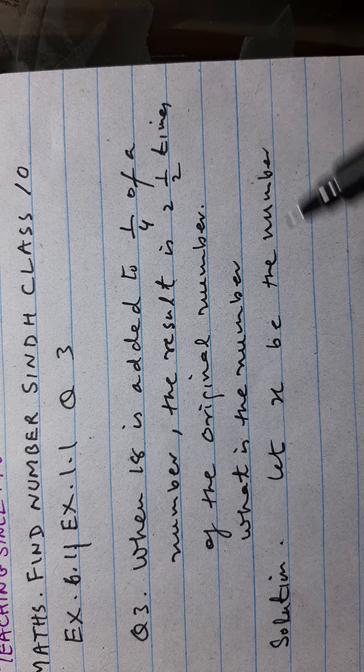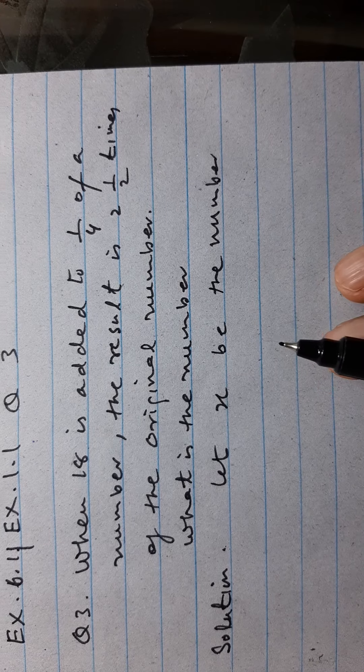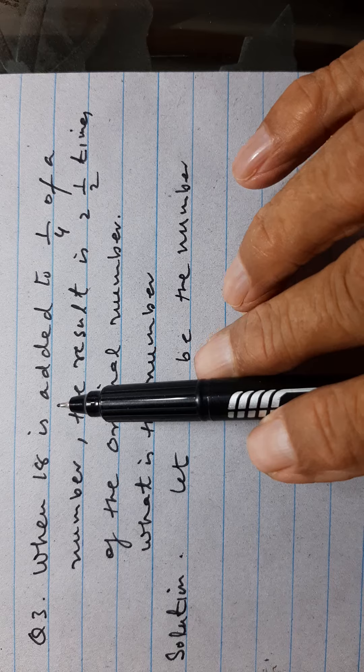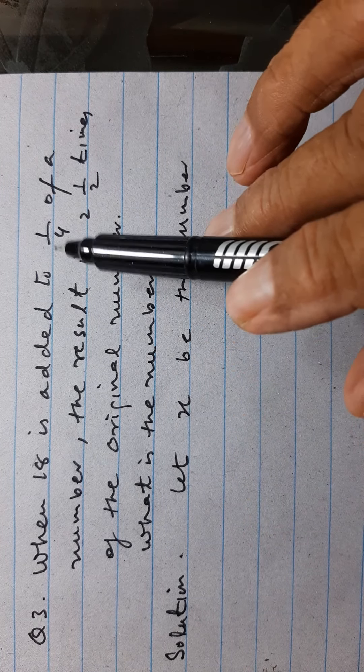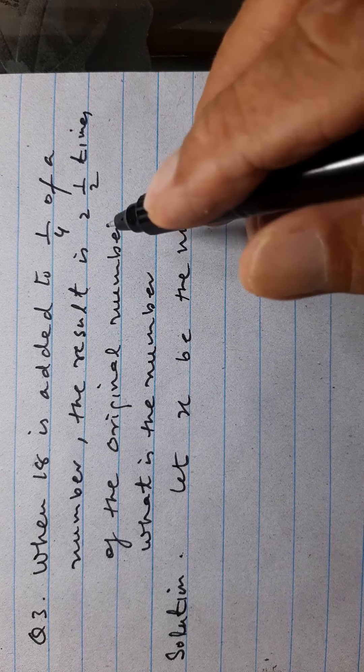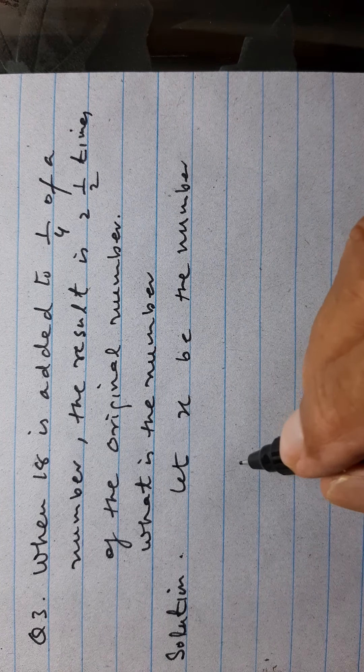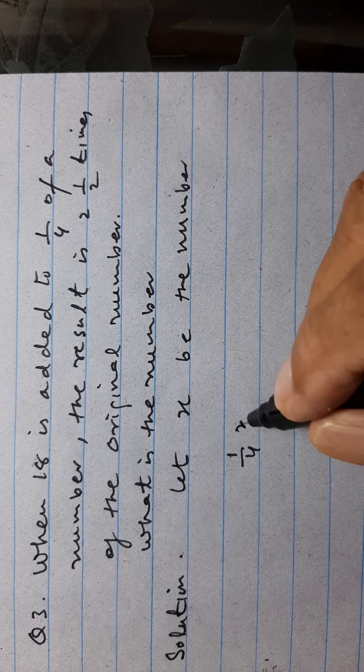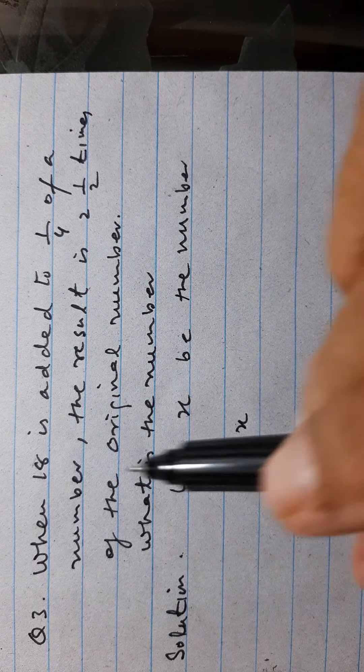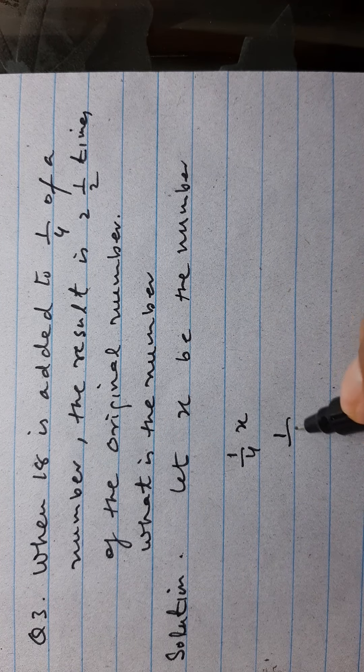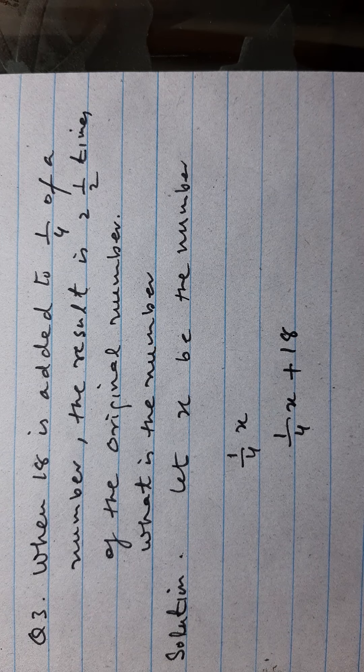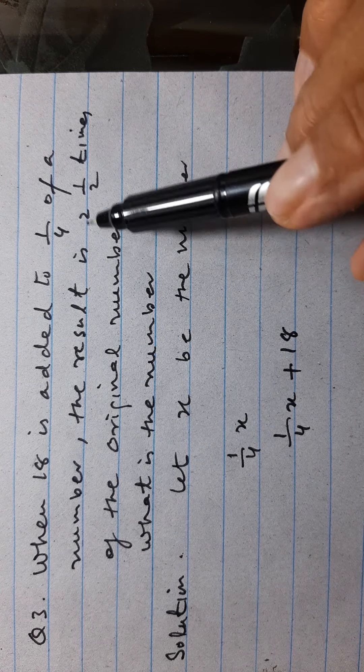And here, 18 is added to one over four of a number. That means this is one-fourth of the number, this is one-fourth x. And this is added 18, this becomes one over four x plus 18.